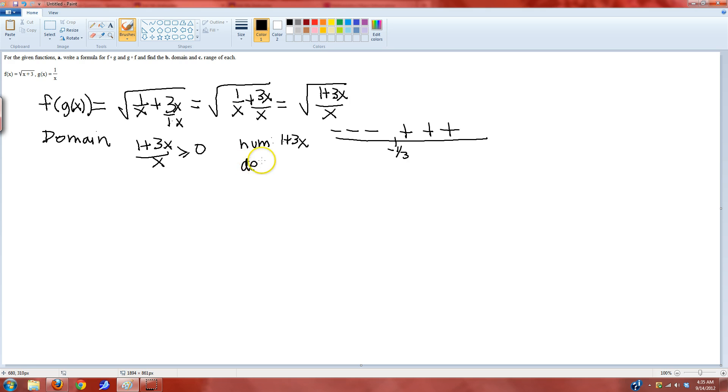Now, we need the sign analysis on the denominator. Much easier. It's just x. And so at 0, it's 0. Negative on the left. And positive on the right.